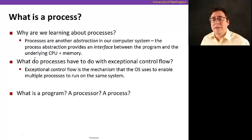So what is a process? But first of all, why are we learning about processes? Well, because they're an abstraction in a computer system that provides this interface between the program and the underlying CPU plus memory. And this is provided by the operating system. So what do processes have to do with exceptional control flow? Well, the operating system is going to have to use tricks with exceptional control flow to give the illusion that multiple processes are running simultaneously in the system.